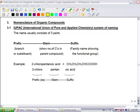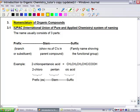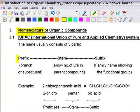Naming organic compounds is known as nomenclature. IUPAC stands for International Union of Pure and Applied Chemistry. It's a system of naming organic compounds. The names consist of three parts: the prefix, the stem, and the suffix.